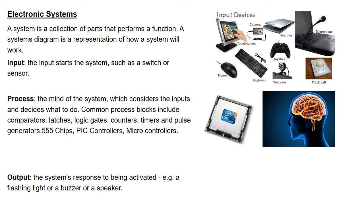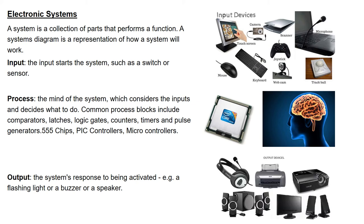Typical outputs could be a flashing light, a buzzer, a speaker, or any of those sort of devices. Think about when you print something from your computer: you press the keyboard or the mouse to print — that's the input. The computer then processes it using its processor, the brain of the computer, and then it sends it out as ink printed on paper — that would be the output.